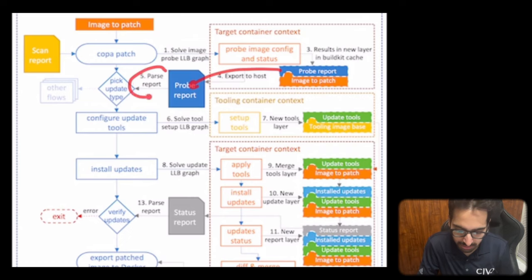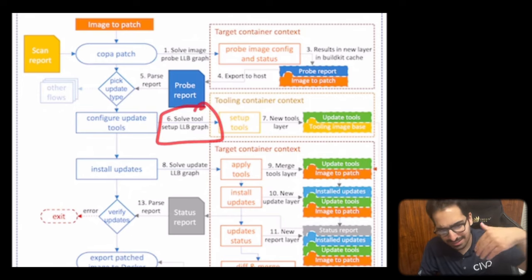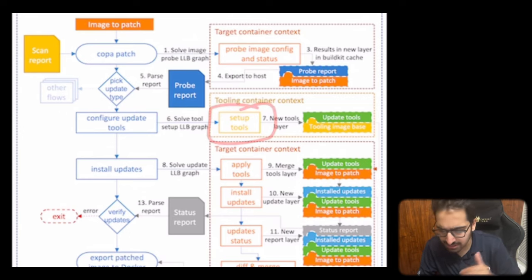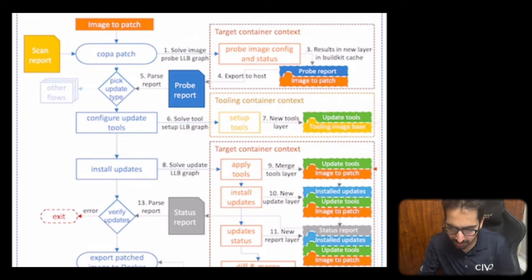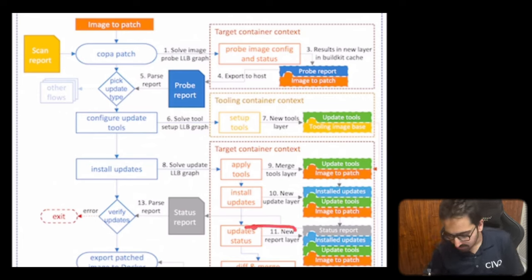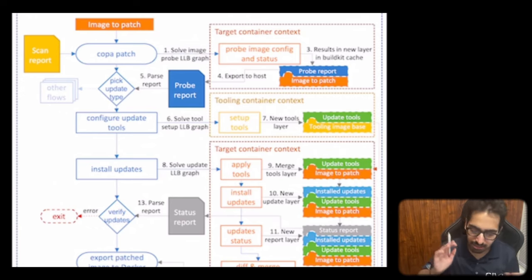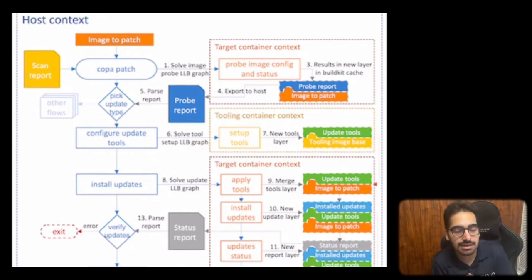Copa then exports to the host, parses the report, fixes and determines the update type, configures update tools like apt or yum depending on the package manager, and solves the tool setup using the LLB dependency graph. It adds a new tool layer, installs updates by solving the update LLB graphs, merges the tools layer, then merges the update layer. The report is verified and finally the patched image is exported as a tarball.